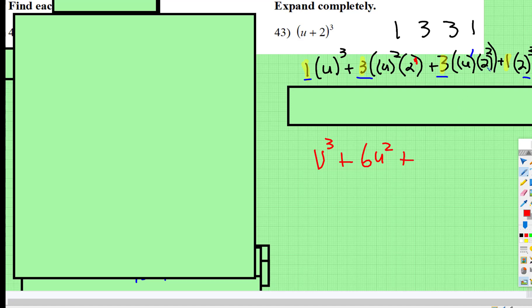Remember, order of operations, you always have to work inside parentheses first. 2 squared is 4, 4 times 3 is 12, and then that's just u to the first. And then 2 cubed is 8.